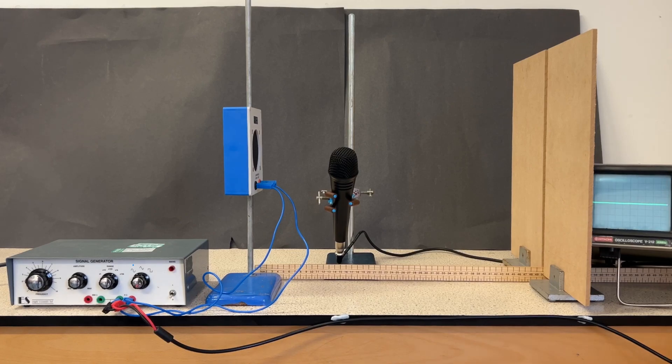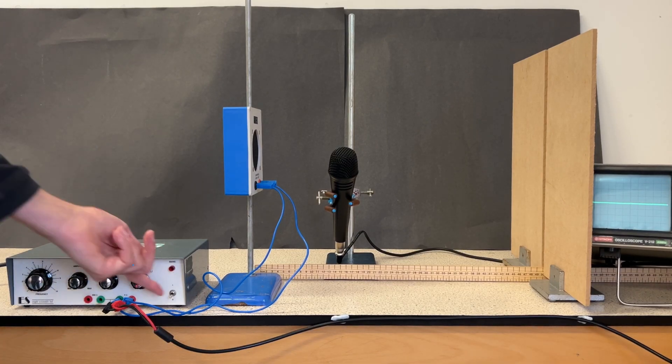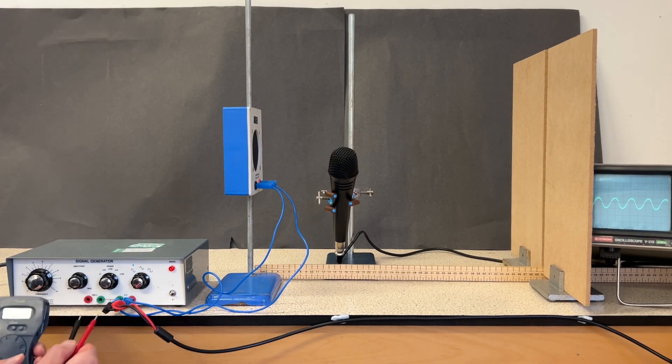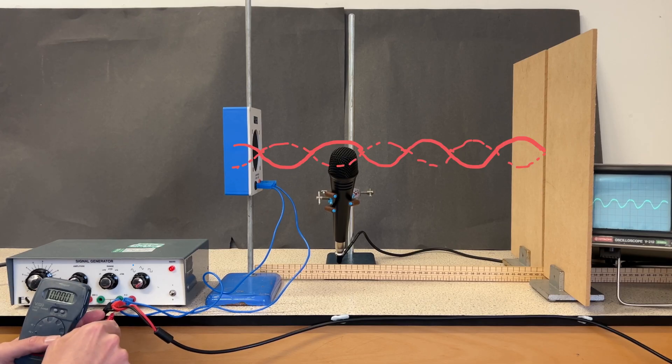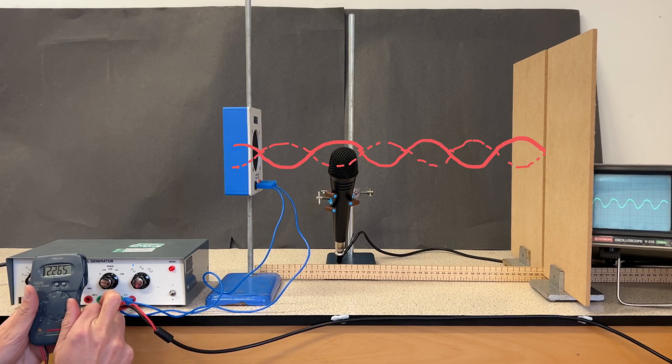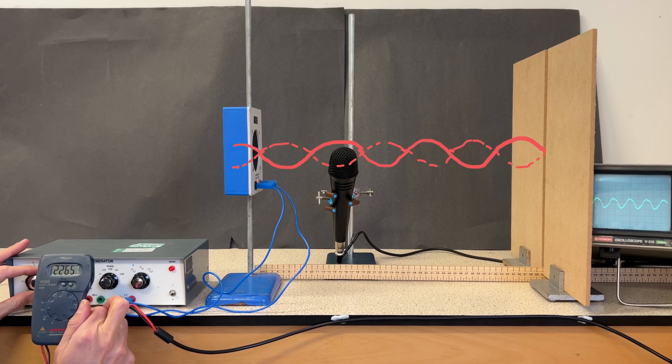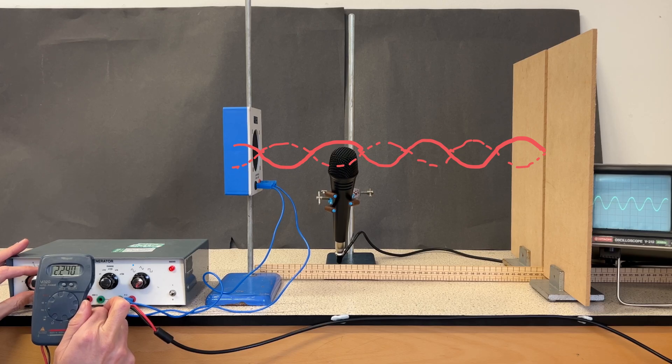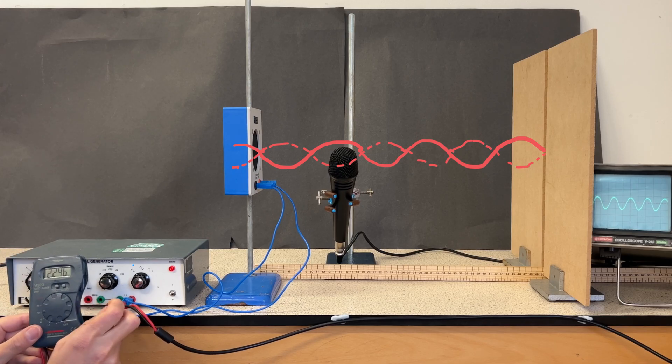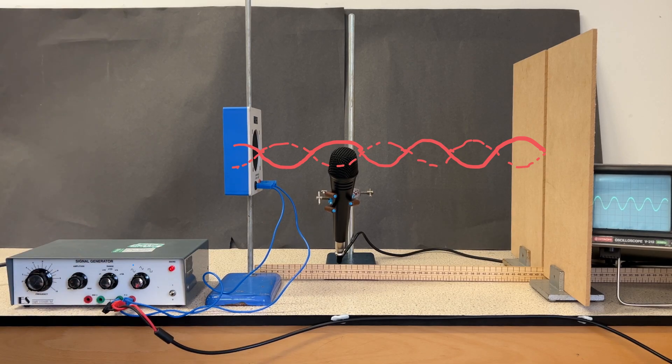The loudspeaker will be an antinode of the stationary wave, and I calculated, by having my loudspeaker 50 cm away from the hardboard, if I set my frequency to about 2250, then I would get 3.25 wavelengths in between, and that should give me a nice stationary wave where I can find several nodes.